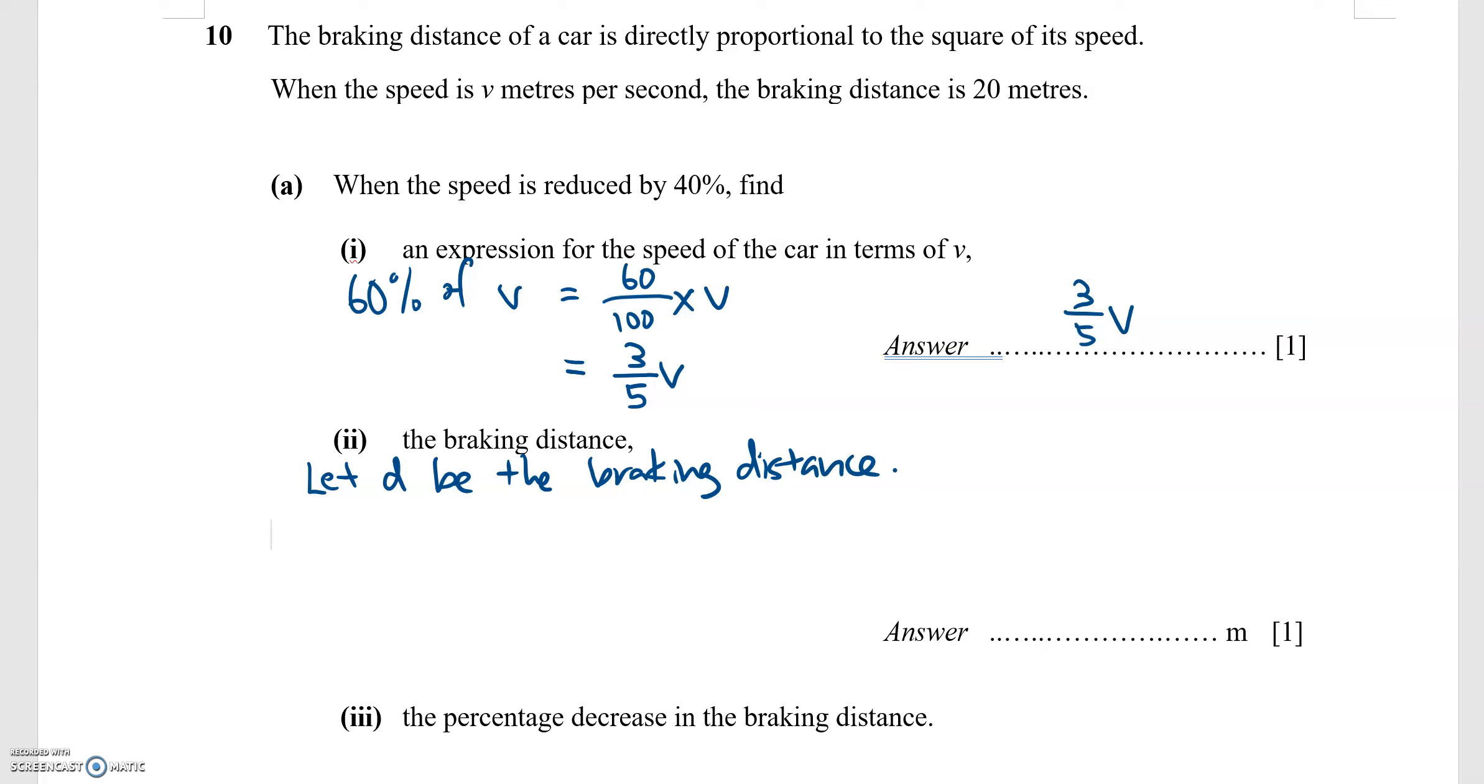And I know that d is directly proportional to the square of its speed, so d can be written as d equals kv squared, where k is a constant.